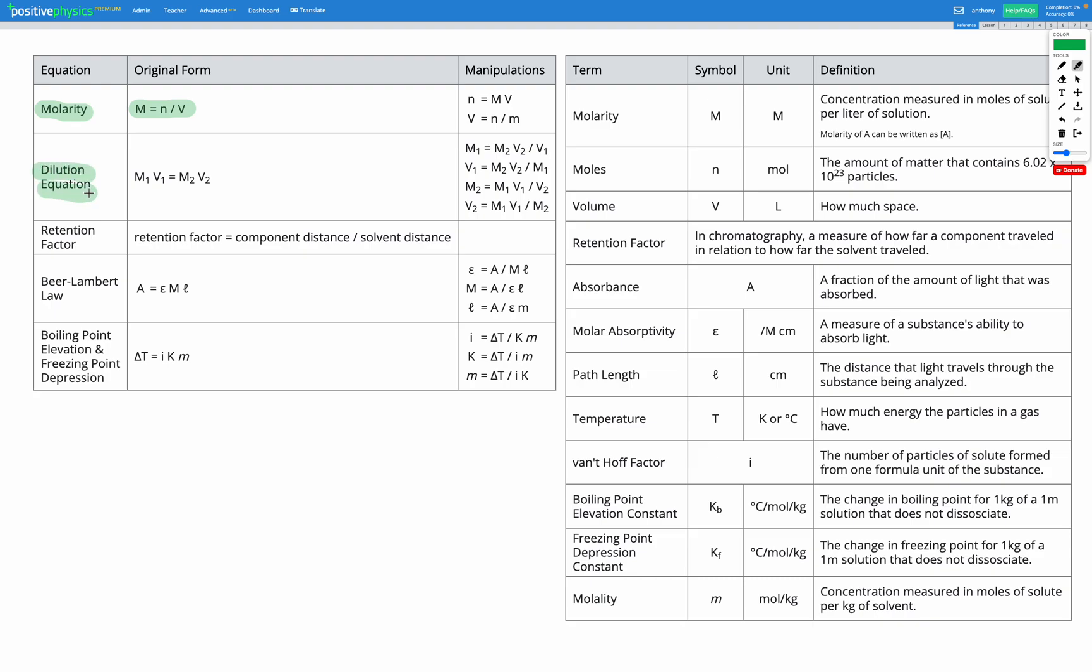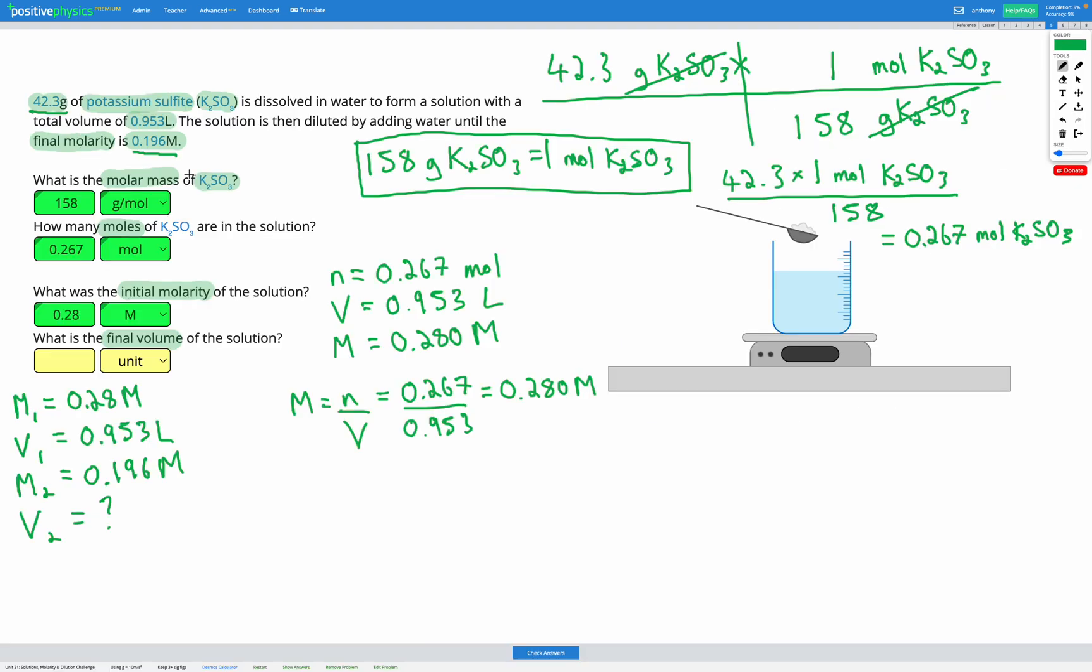Let's find our dilution equation on our reference sheet. Here it is. The dilution equation is M1 times V1 equals M2 times V2. We're trying to find V2. Right now V2 is multiplied by M2, so I'm going to divide by M2 on both sides to cancel that out on the right, leaving V2 on its own. We end up with V2 equals M1 times V1 divided by M2.